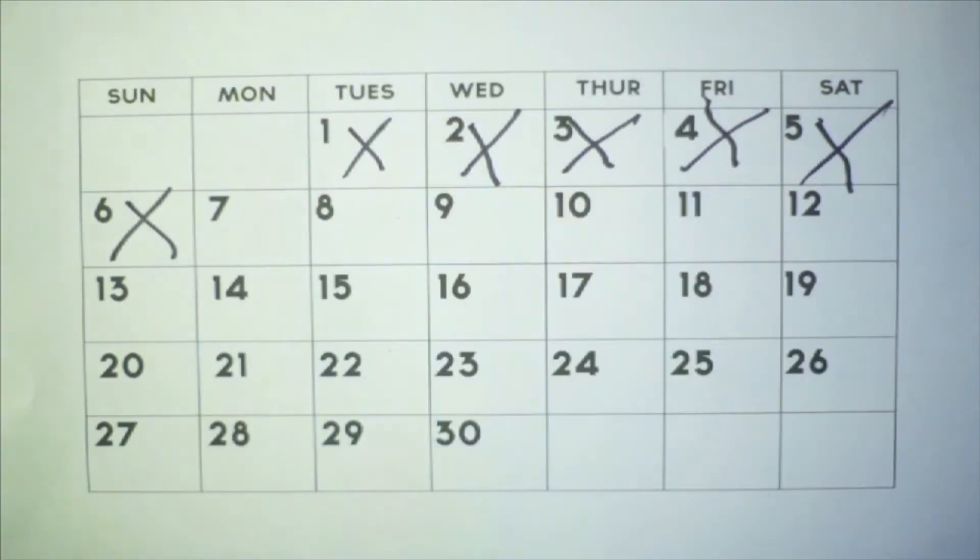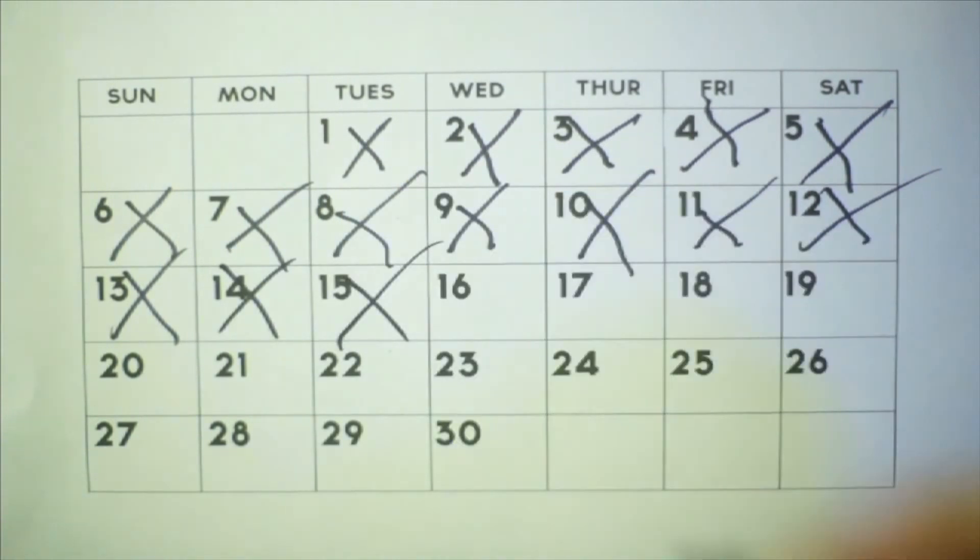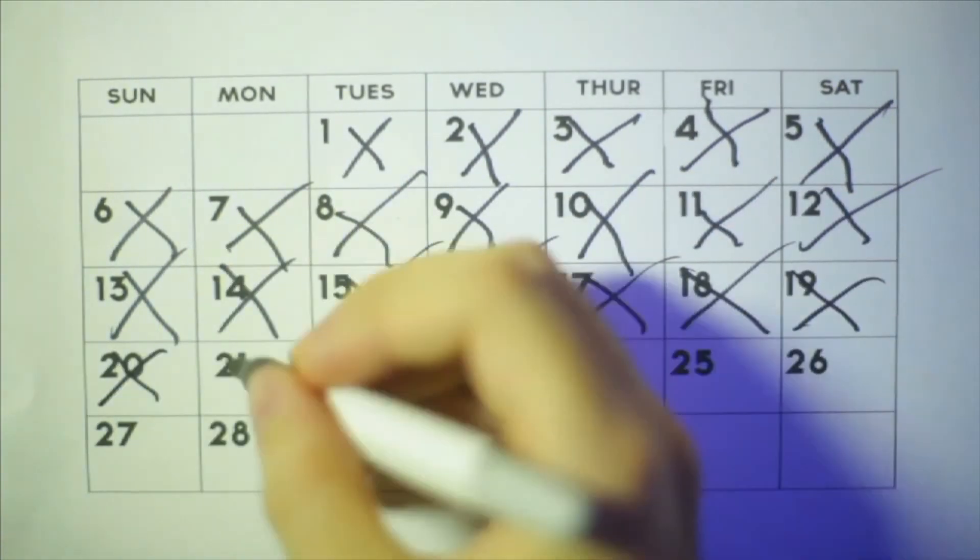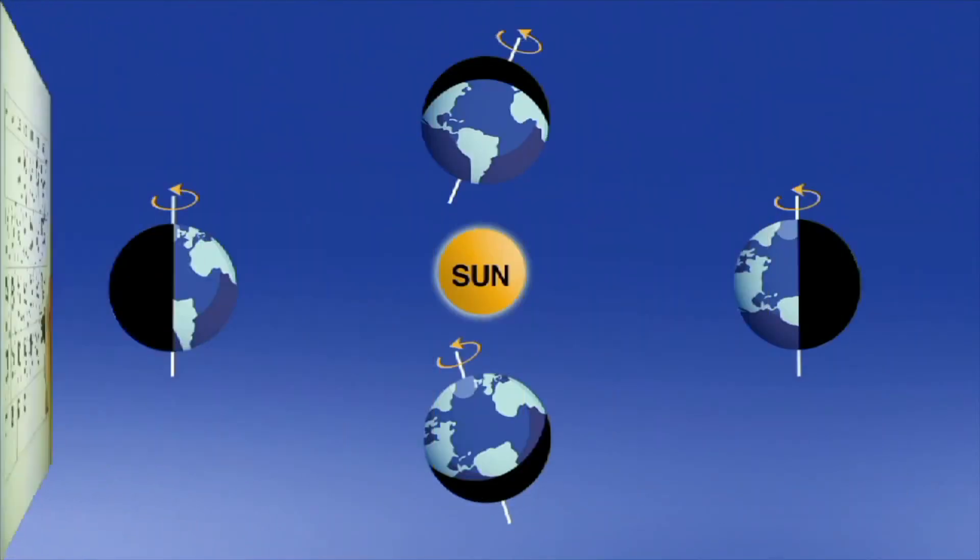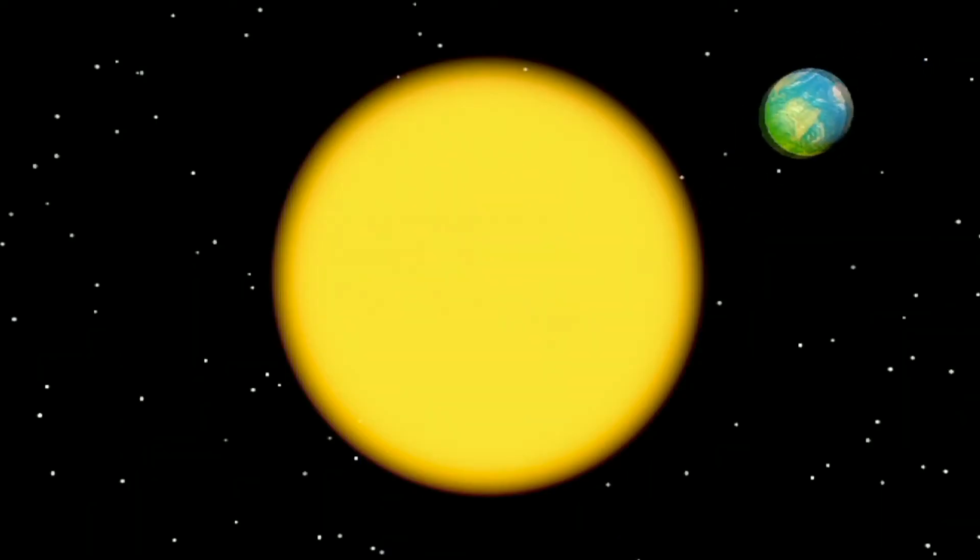We measure our month based on the orbit of the Moon around Earth. The Earth's different seasons are created by Earth orbiting the Sun and its tilt. While the Earth is revolving around the Sun, it tilts slightly on its axis. Earth's orbit allows the seasons to change.